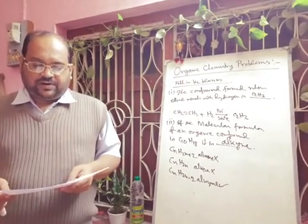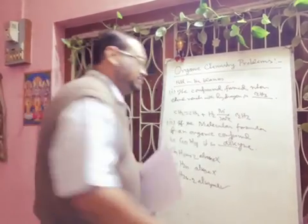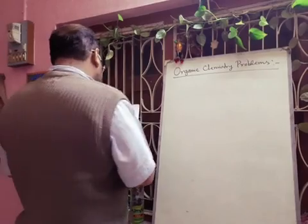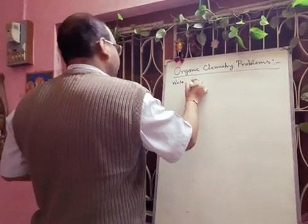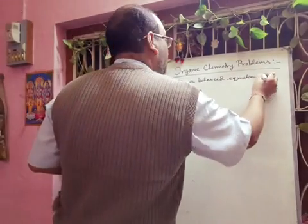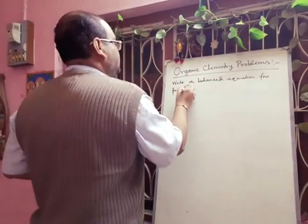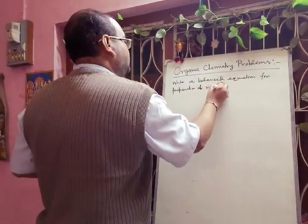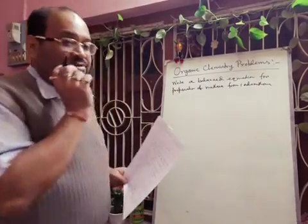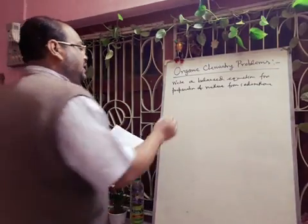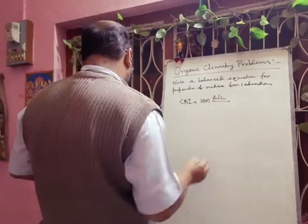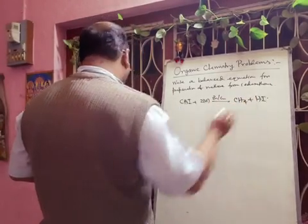Next: write a balanced equation for preparation of methane from iodomethane. This question is very important. Here we use zinc-copper couple and hydrogen. So if we take CH3I and it is reduced by hydrogen in the presence of zinc-copper, there will be formation of CH4 plus HI. This is a reduction process.